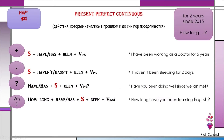Present perfect continuous is usually used to describe some actions which began in the past and are still in progress, are still continuing. That's why it usually answers the questions: how long? How long have you been working? How long have you been studying? How long have you been learning English?